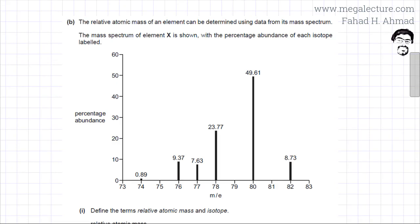The following past paper question reads that the relative atomic mass of an element can be determined using data from its mass spectrum. So they have given you the mass spectrum of that particular element.